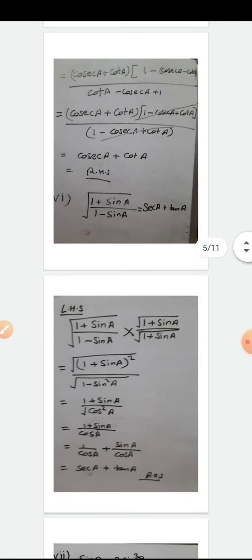Now Part 6. Left hand side is √[(1 + sin A) / (1 - sin A)]. We will rationalize this. When the denominator is under a root, we rationalize by multiplying and dividing by the same expression with opposite sign. So I multiply and divide by √(1 + sin A). The numerator becomes √[(1 + sin A)²] and the denominator becomes √[(1 + sin A)(1 - sin A)] = √(1 - sin²A) using the A+B)(A-B) identity.